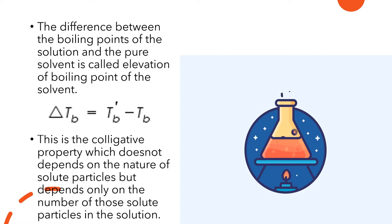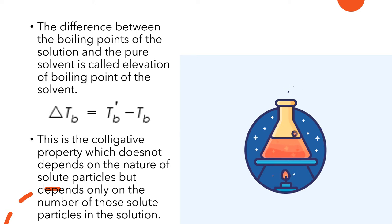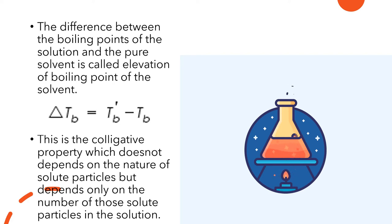We need to find the difference in boiling point. If we know the boiling point of the solution and of the solvent, we take their difference. The formula is: delta Tb equals T'b minus Tb. Elevation in boiling point is a colligative property. Colligative properties include ebullioscopy, depression in freezing point, and elevation in boiling point. These colligative properties depend on the number of solute particles, not on the nature of the solute particles.